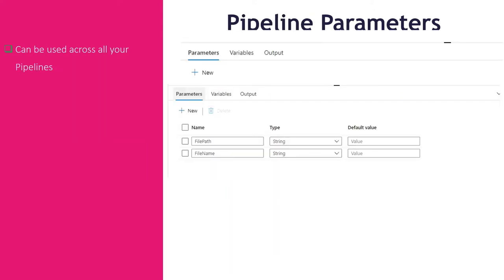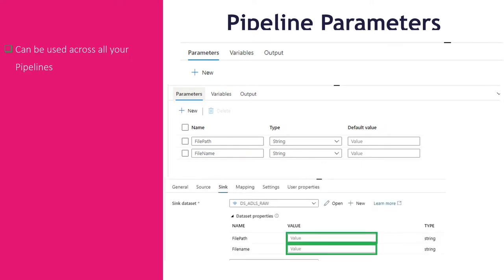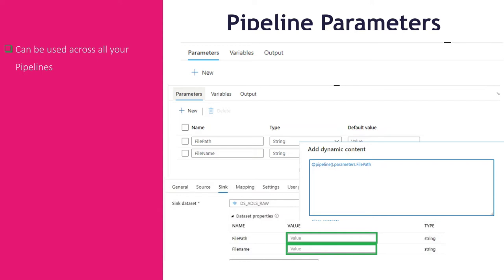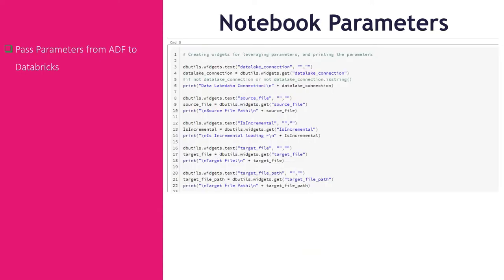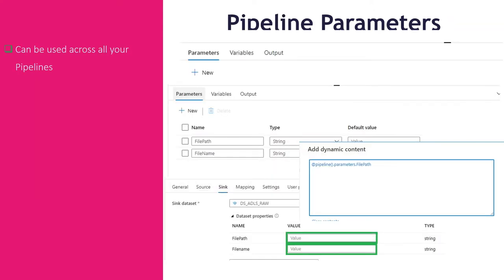The next one is the pipeline parameter. If we've just created the dataset parameters with file path and file name, and I want to pass the file path through to my dataset, I create the same two parameters at the pipeline level. Then I go to my copy data pipeline, go to the sink, and those two parameters are also available as values to assign. I will explain this further in an upcoming demo.